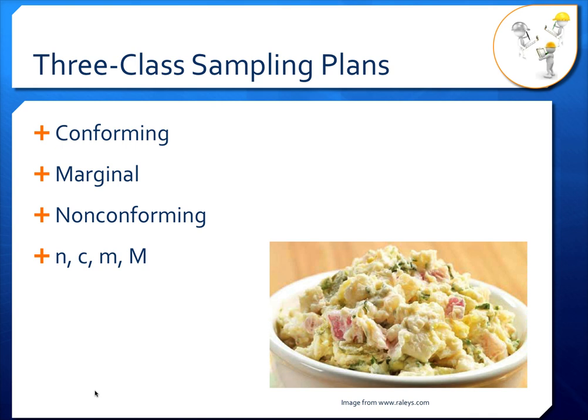In the three-class plan, we still have N, C, and little m — exactly the same as in the two-class plan. We also have big M, which is the maximum number of colony-forming units per gram of food allowed. If even one sample has CFUs above big M, we automatically reject the whole lot. Samples between little m and big M are marginal — little m represents the CFUs per gram considered acceptable for food produced under good manufacturing practices, because you can't have zero microorganisms in anything that's not commercially sterile.